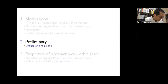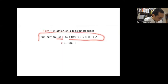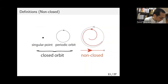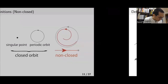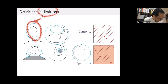Now I explain the details of the new invariant. In this talk, a flow means an R-action on a topological space, and v is the flow on the topological space. If the orbit is a singleton, then the orbit is called a singular point. A periodic orbit is a circle, and this is also called a closed orbit. The omega limit set is a kind of forward limit set. If you take a point that spirals inward, the positive limit set is the attracting set. The omega limit set can become a torus or the suspension of contour sets.